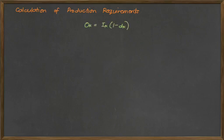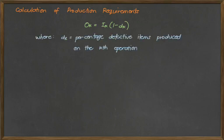So we use the formula O sub K equals I sub K times 1 minus D sub K, where D sub K is the percentage defective items produced on the Kth operation.